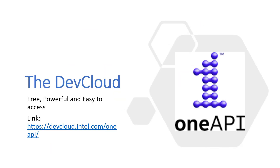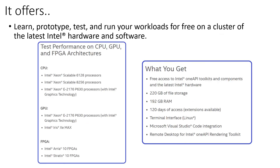Where do I run all this? You need a powerful place to run all this because these kits are extremely useful and handy, and at the same time they need a suitable environment. The Intel Dev Cloud is free, powerful, and easy to access. The Dev Cloud offers features that help you with learning, prototyping and testing. Importantly, you can run all your workloads for free on a cluster of the latest Intel hardware and software — that's a phenomenal feature. You can test performance on CPU, GPU, and FPGA architectures and choose the best one for your process.